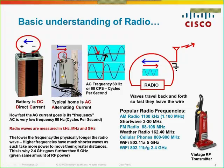The key takeaway is: if you can go back and forth fast enough — beyond the 60 cycles per second of AC — that electricity will move so fast it actually leaves the wire. And that's what radio is. If you look at popular radio frequencies, AM radio at 1100 AM is 1.1 megahertz or 1100 kilohertz.